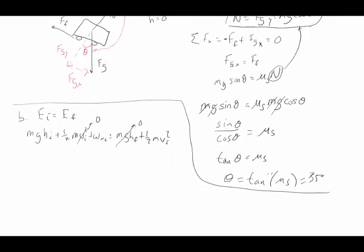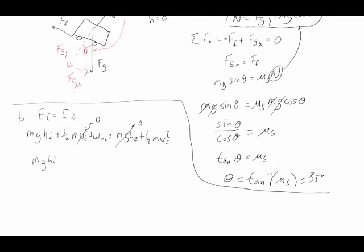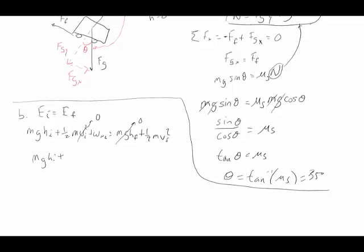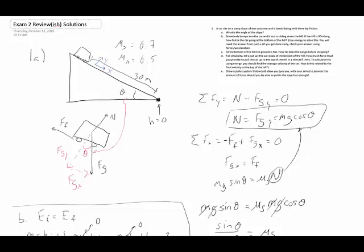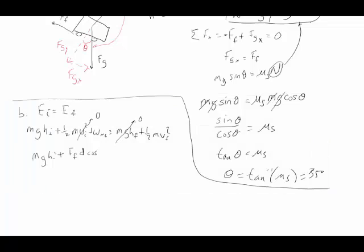Work is always force times distance times cosine of the angle between them. The force acting here is friction, which is slowing the car down. The friction force points up the hill while the distance is down the hill, so the angle is 180 degrees, making cosine of 180 equal to minus one.